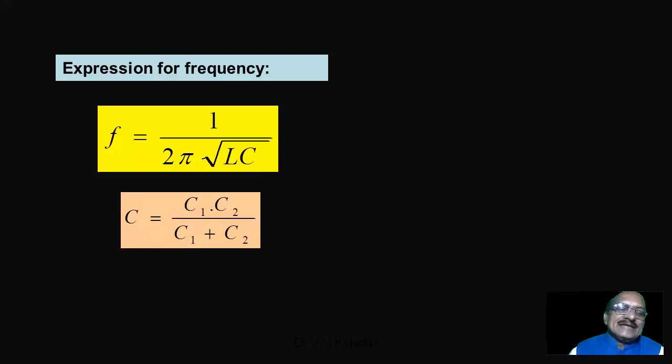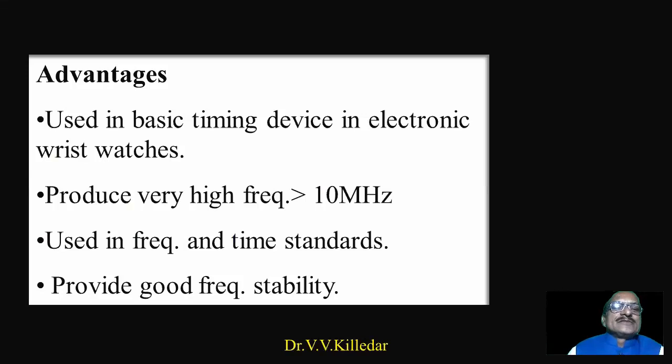Now used in basic timing device in electronic wristwatches: crystal oscillators. So these oscillators are used in wristwatches because nowadays we are using wristwatches working on a cell or a DC voltage.